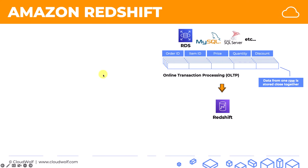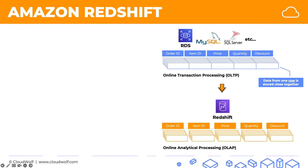That's where Redshift comes in. Redshift stores data differently — it's an online analytical processing type of data storage. Here, data from one column is stored close together. So if we take the quantity column and look at where it's stored on disk, all those values will be stored close together. All the discounts will be stored close together and all the prices will be stored close together. It's not as efficient at writing and reading individual rows as OLTP was, but on the other hand it's very efficient at analyzing. If you want to aggregate and find the total quantity or find the average price, it's quite efficient because all that information is stored close together on disk.